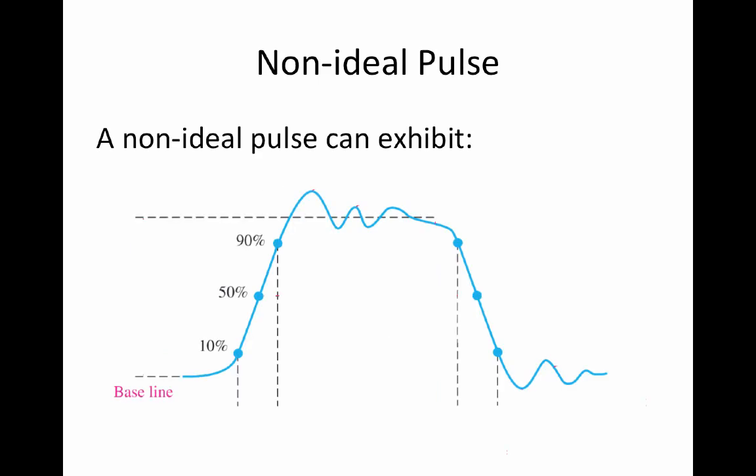So what does an unideal pulse look like? An unideal pulse can exhibit some or all of the following characteristics: overshoot, ringing, droop, undershoot, rise time and fall time.